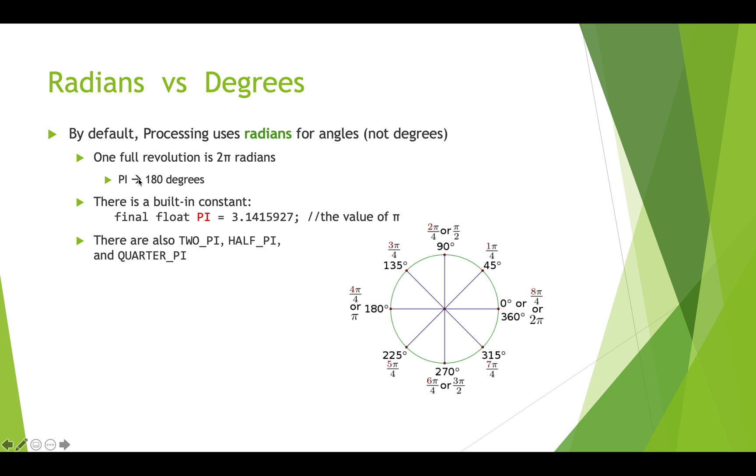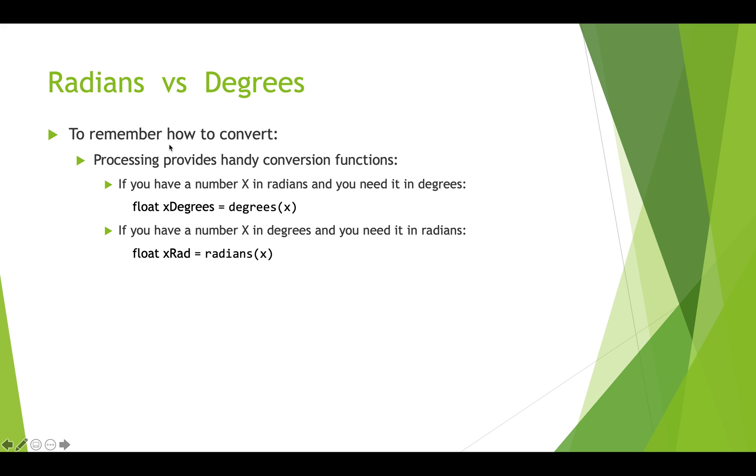There are built-in constants in processing that can help you get these numbers - there's a constant for pi, 2 pi, half pi, quarter pi, etc. If you need to convert between radians and degrees, processing offers handy conversion functions. If you have a number in radians and need it in degrees, you do float x_degrees equals degrees of x, passing in the radians. And the opposite works for converting degrees to radians.